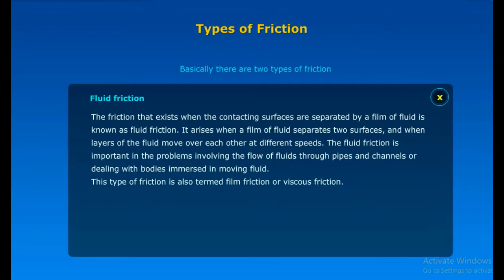The friction that exists when the contacting surfaces are separated by a film of fluid is known as fluid friction. It arises when a film of fluid separates two surfaces and when layers of the fluid move over each other at different speeds. The fluid friction is important in the problems involving the flow of fluids through pipes and channels or dealing with bodies immersed in moving fluid. This type of friction is also termed as film friction or viscous friction.